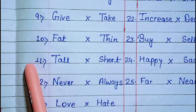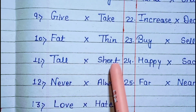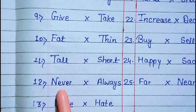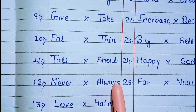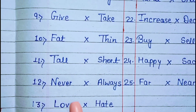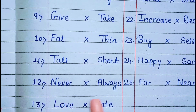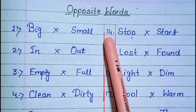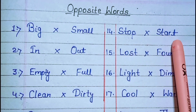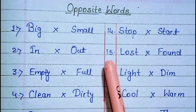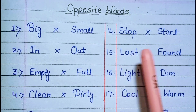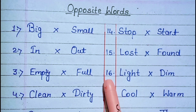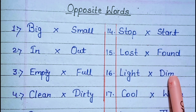11. Tall, short. 12. Never, always. 13. Love, hate. 14. Stop, start. 15. Lost, found. 16. Light, dim.